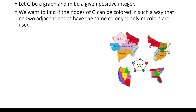In graph coloring problems, a graph G is given along with the number of colors m. We want to find if the nodes of G can be colored such that no two adjacent nodes have the same color, using only m colors. The first step is to choose a vertex and assign it a color, then move to the next vertex and try to assign it a color that does not conflict with its adjacent vertices.